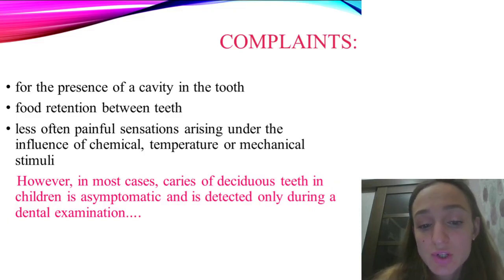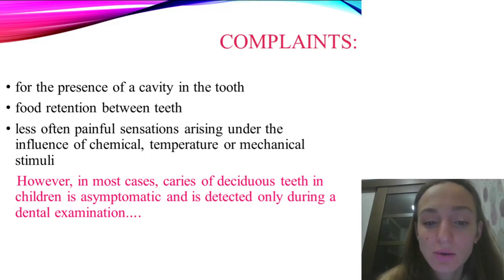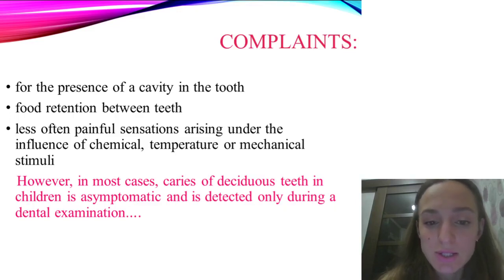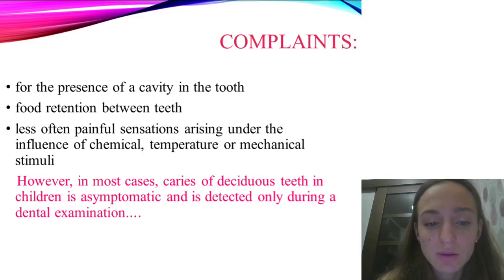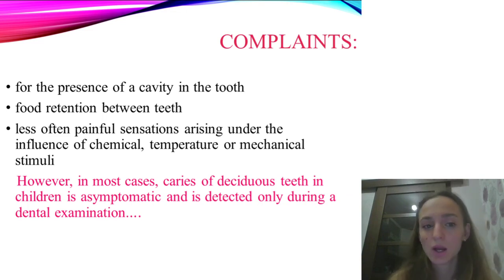Localization of acute superficial caries corresponds to that of the caries spot. Enamel defects look like chalk-like changed enamel with visible destroyed structure. As a rule there are no complaints. Chronic superficial caries in deciduous teeth at the stage of root formation is very rare, characterized by absence of subjective sensation, and usually defined during child examination. The caries defect in the form of a dark brown spot is localized on the vestibular surface of upper deciduous incisors or other teeth, and probing does not cause painful sensation.